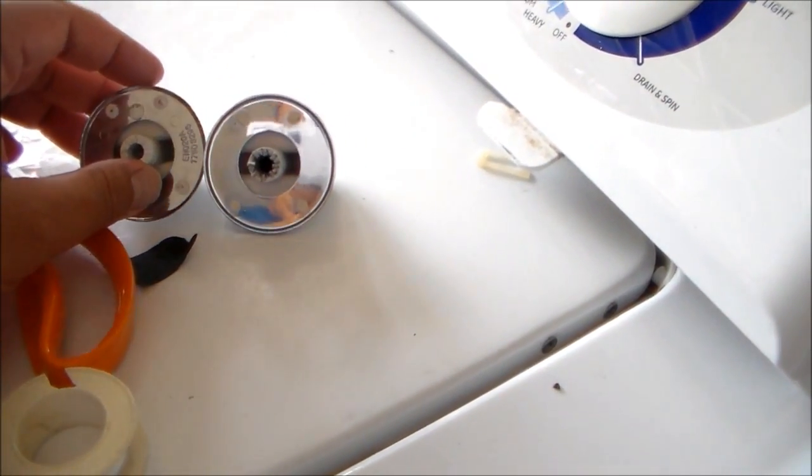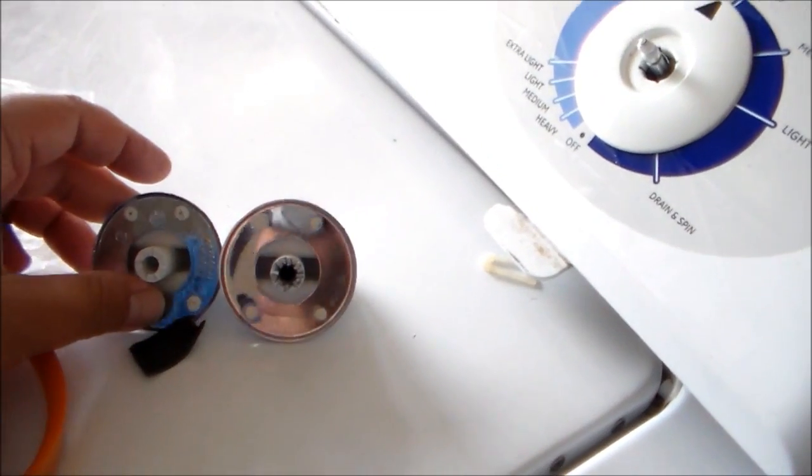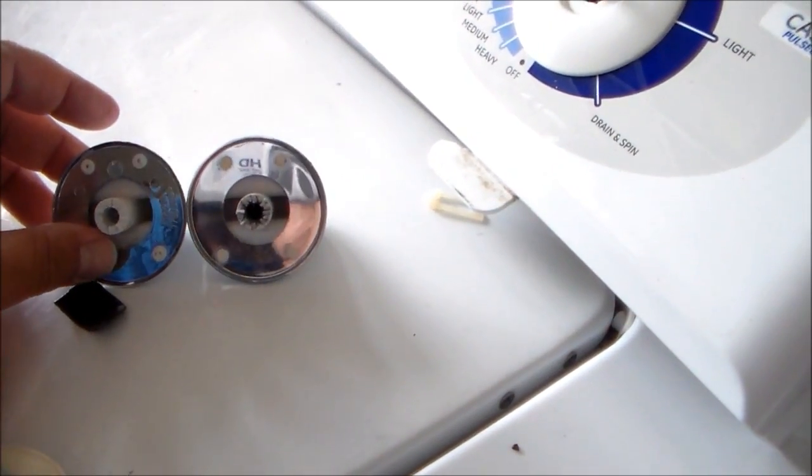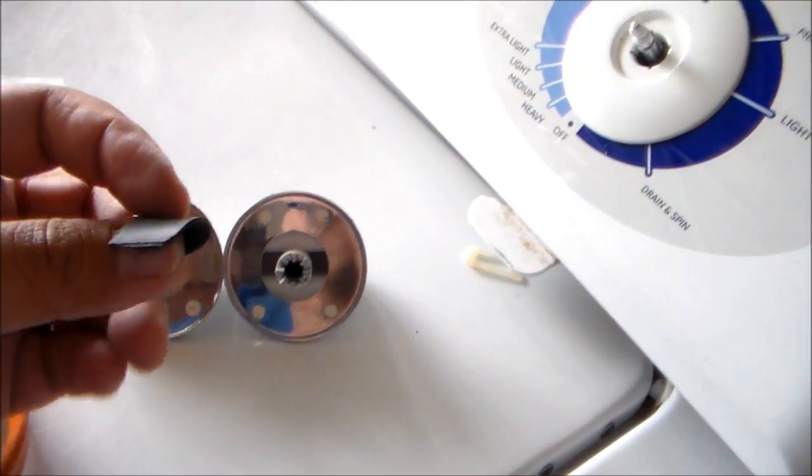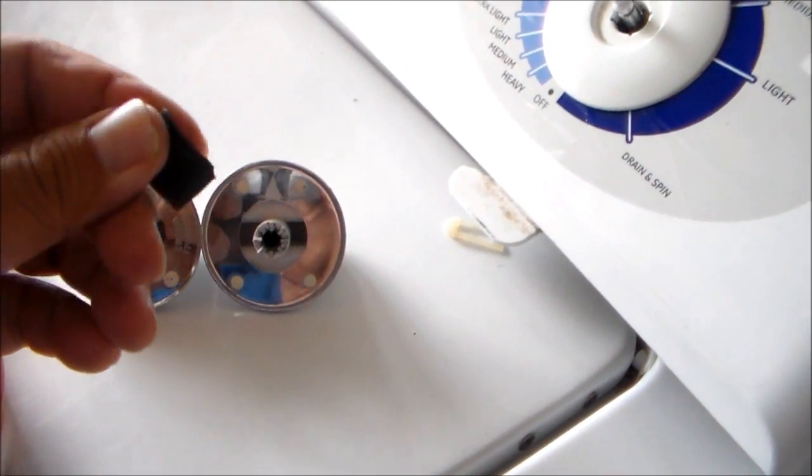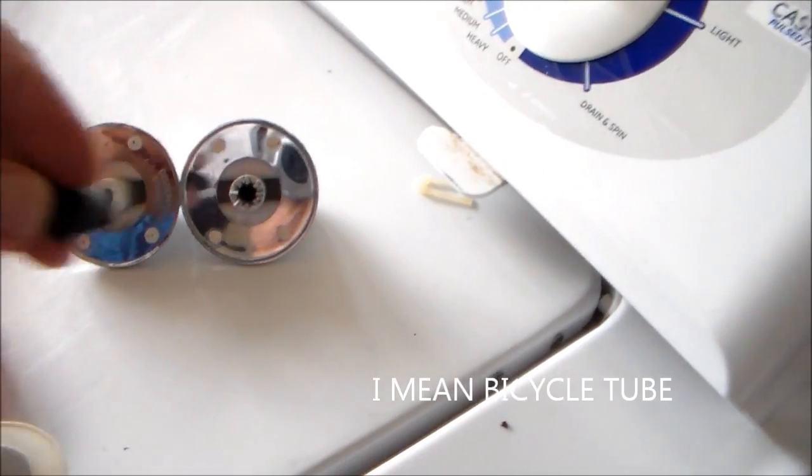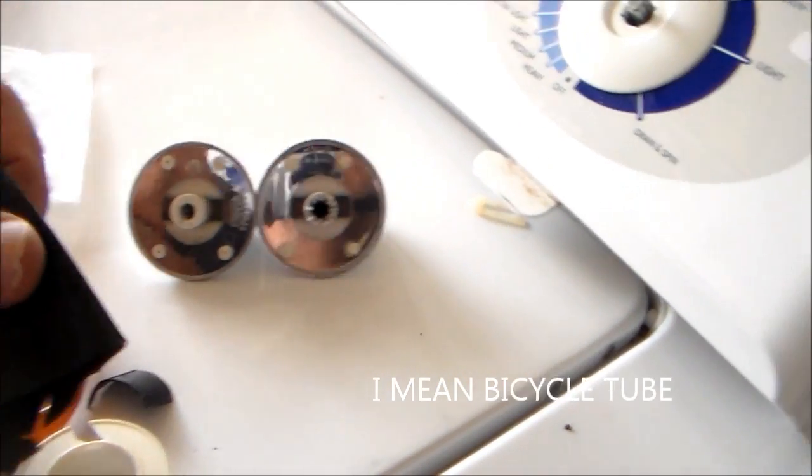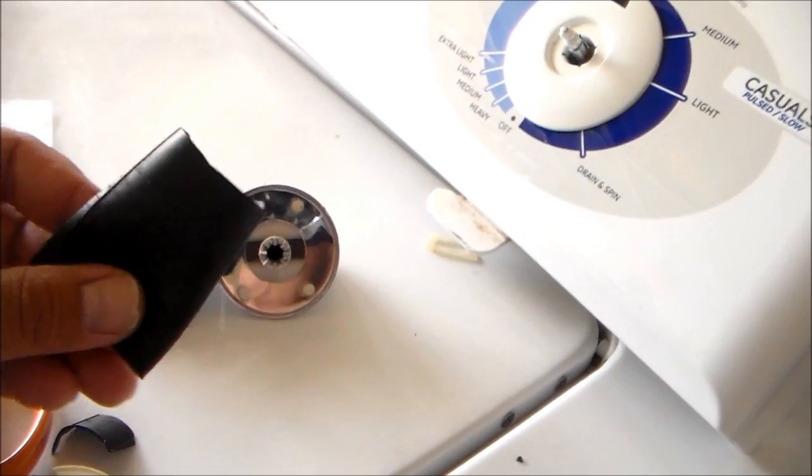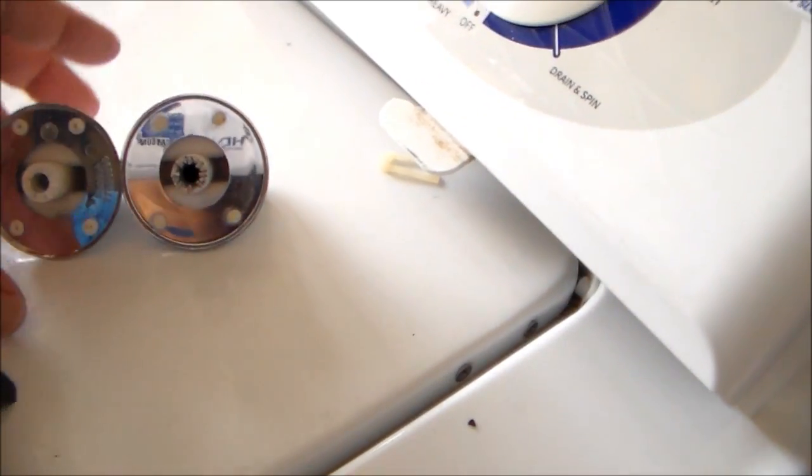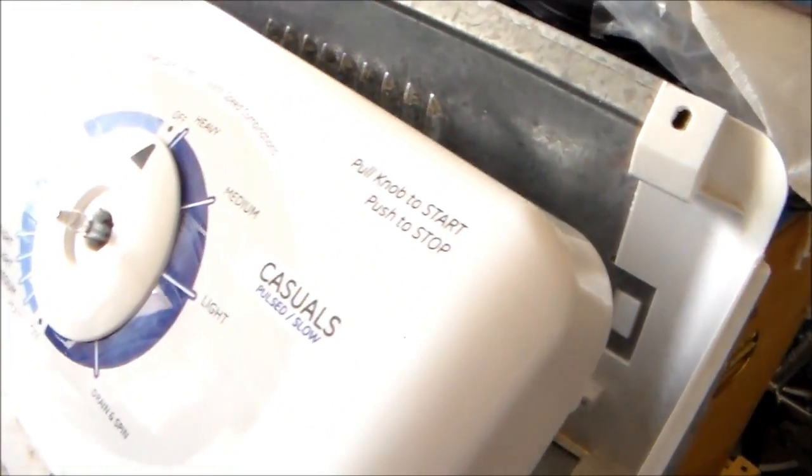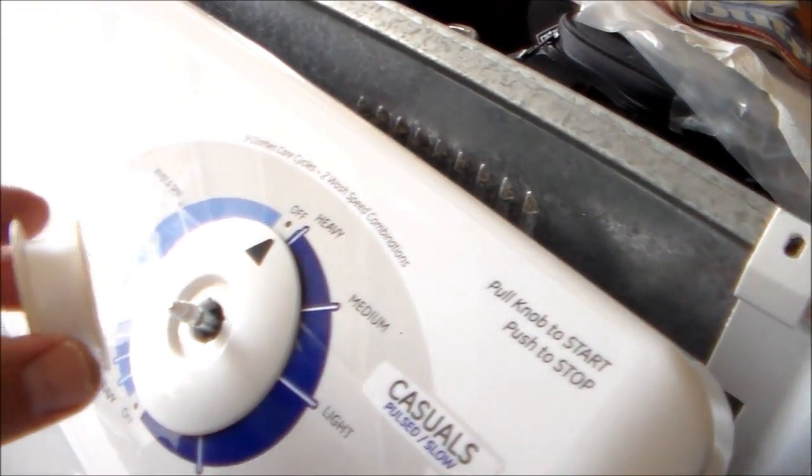Okay, so what I did was I stuffed some rubber tubing inside. This is from bicycle tubing, from a bicycle wheel that I don't use. And then I put some plumber's tape on the tip.